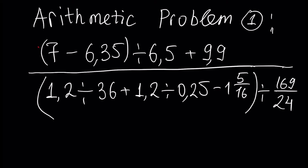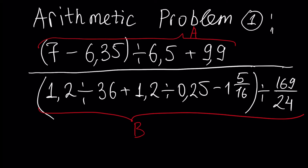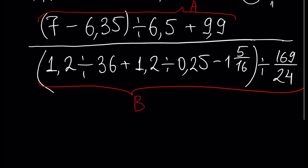we have to denote the numerator of our fraction as A, and the denominator of our fraction will be B. We will solve A and B separately. A will be equal to the numerator of our fraction.